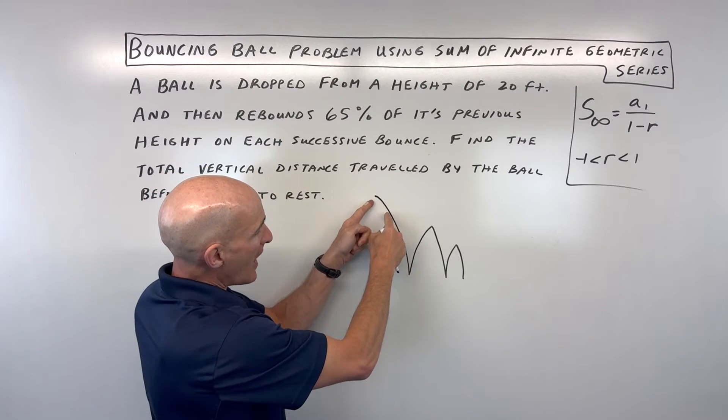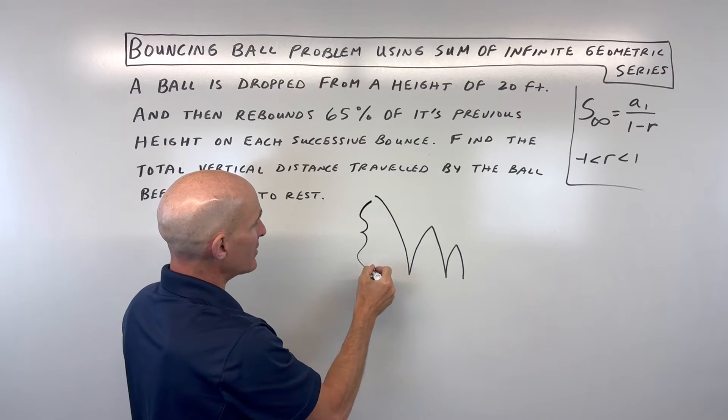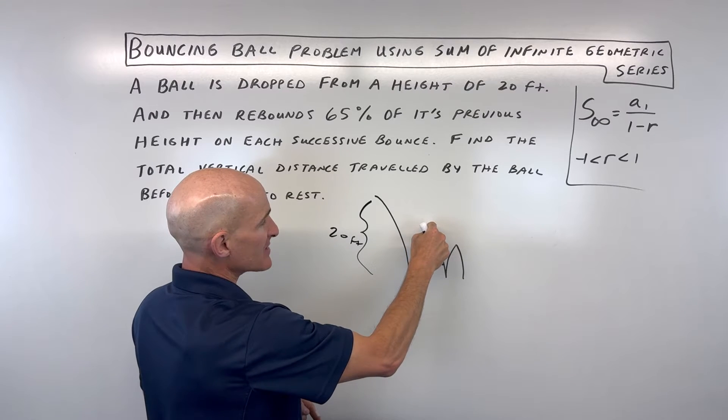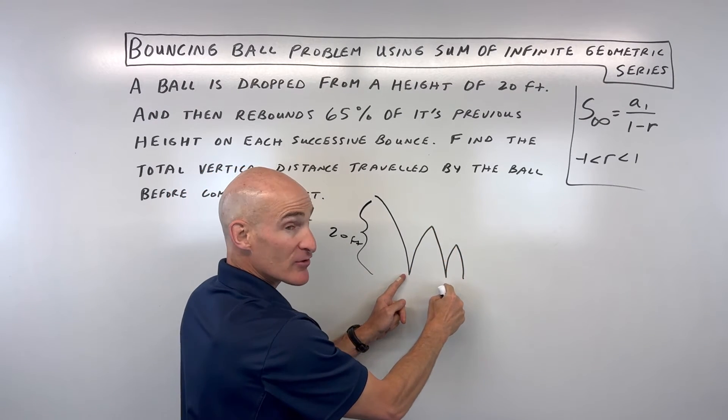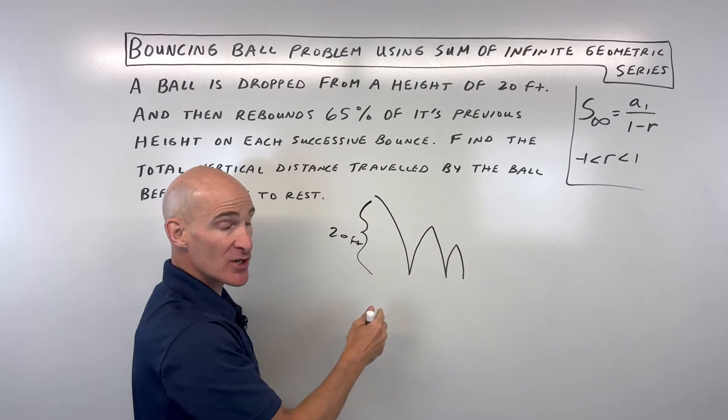The thing is, when you first drop it, you have this initial drop of 20 feet. But then when it goes up on this next bounce, not only does it travel up, but it also travels down. Travels up, travels down. But this one just has that one initial drop.